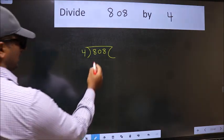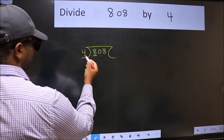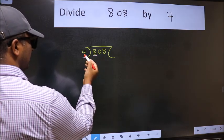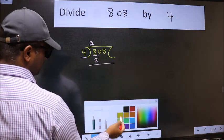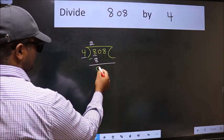Next. Here we have 8 and here 4. When do we get 8 in the 4 table? 4 twos, 8. Now we should subtract. We get 0.